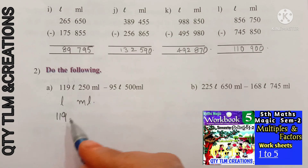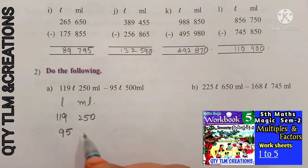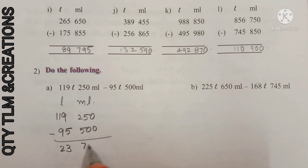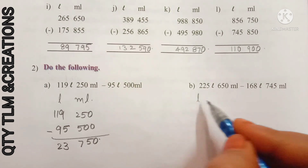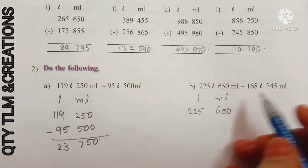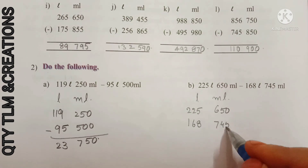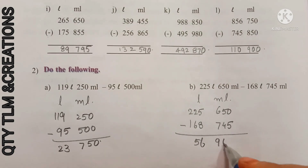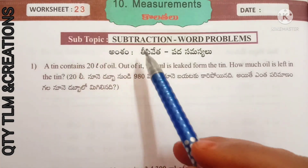A: 119 liters 250 milliliters minus 95 liters 500 milliliters, we get 23 liters 750 milliliters. Next, B: 225 liters 650 milliliters minus 168 liters 745 milliliters, we get 56 liters 905 milliliters. Next, worksheet number 23, subtopic subtraction word problems.